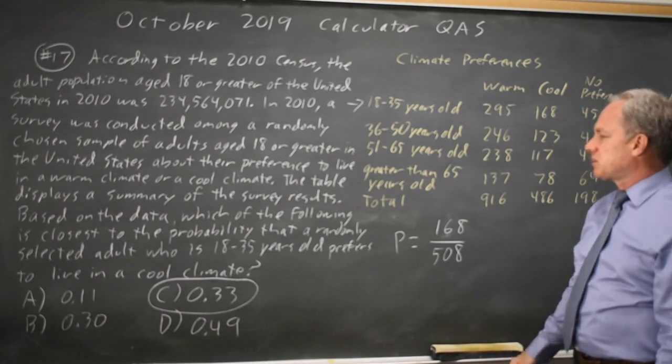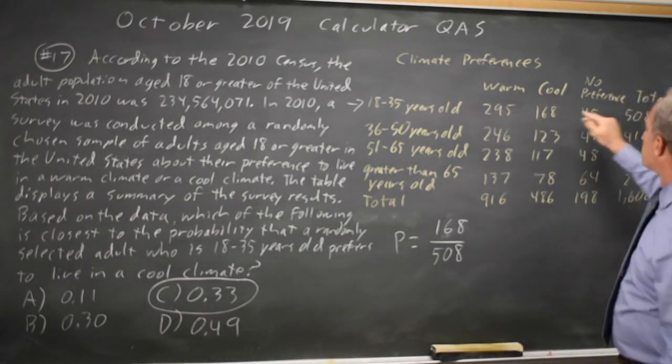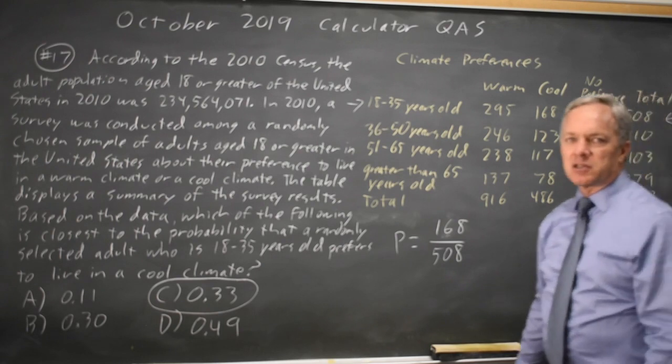In this case they said a randomly selected adult who's 18 to 35, and that makes your denominator the entire top row.